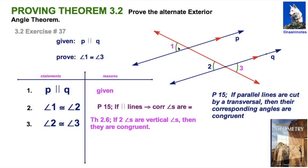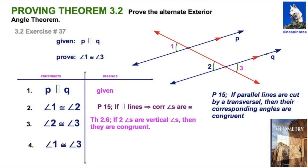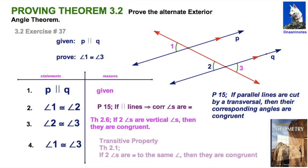And look, we're done. We've got angle 1 is congruent to angle 2, and angle 2 is congruent to angle 3. Therefore, by the transitive property, we're going to conclude that angle 1 is congruent to angle 3. That's theorem 2.1 in our textbook: if two angles are congruent to the same angle — angles 1 and 3 are both congruent to angle 2 — then they are congruent to each other. And that concludes our proof.